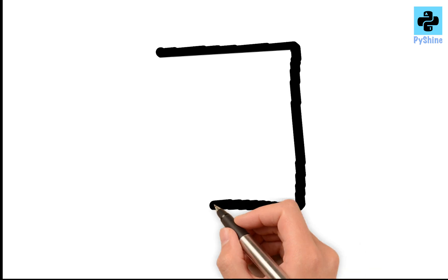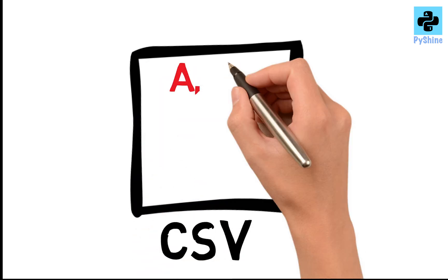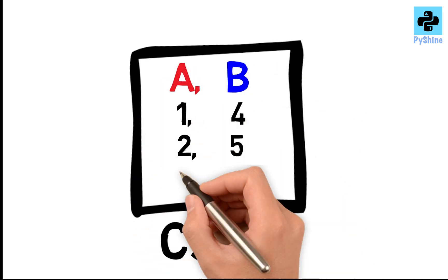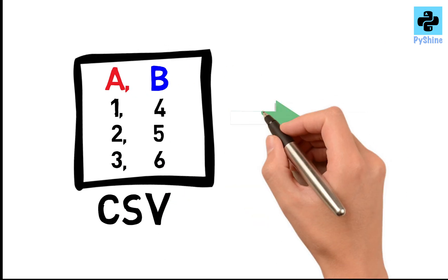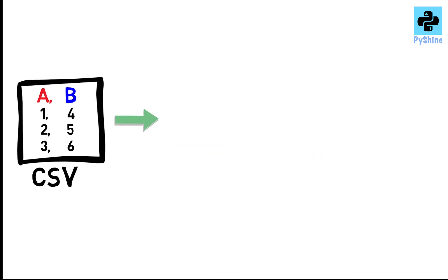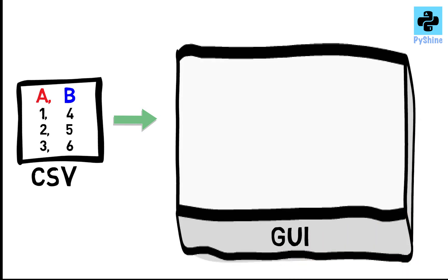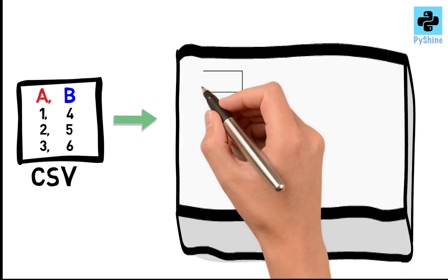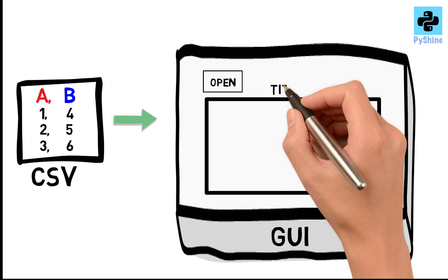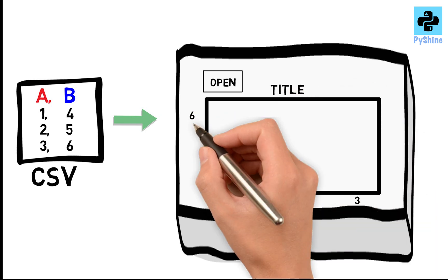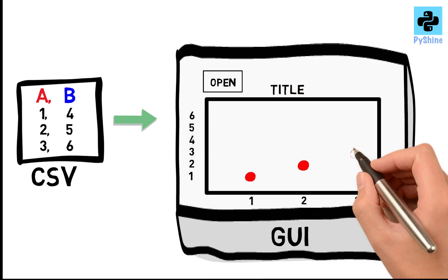A CSV file contains comma-separated values. Let's say we have two columns, A and B. We need to plot the data under each of them. With an open button on the GUI, we can read this file and plot the data using Matplotlib.